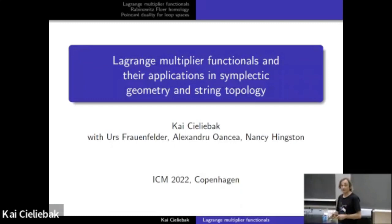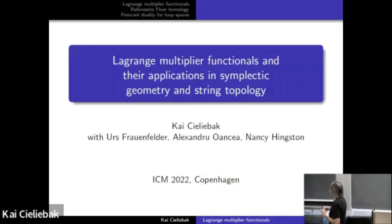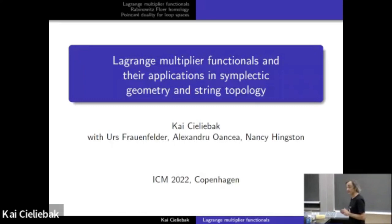The first part will explain this old idea from calculus, namely Lagrange Multiplier Functionals. In the second part, I'll focus on a very specific Lagrange Multiplier Functional, the Rabinowitz Action Functional, and explain its implications in symplectic geometry. In the third part, I'll come to a version of Poincaré Duality for loop spaces. All this is joint work with Urs Frauenfelder, Alexandru Wanschein, and Nancy Hingston in varying configurations.